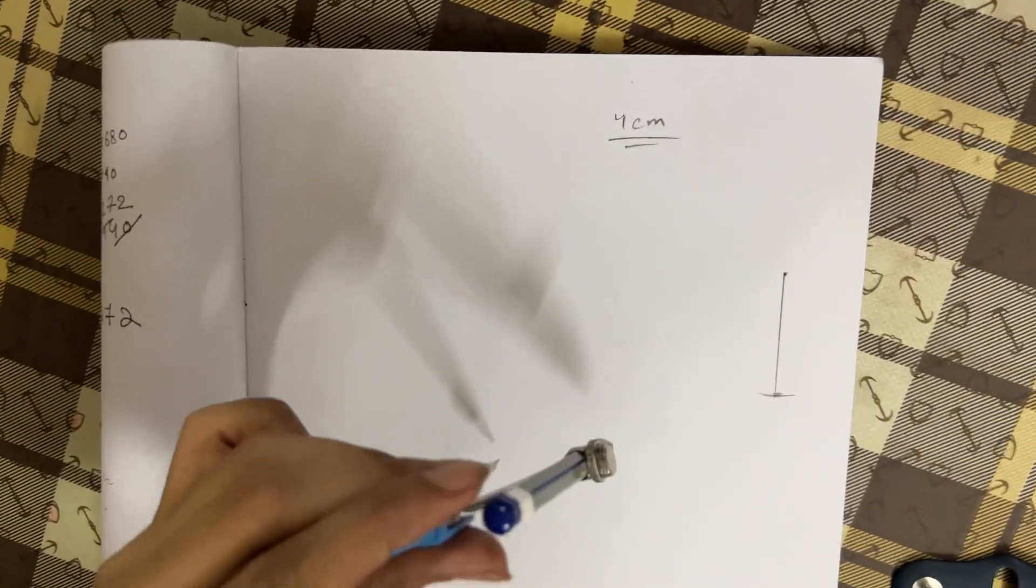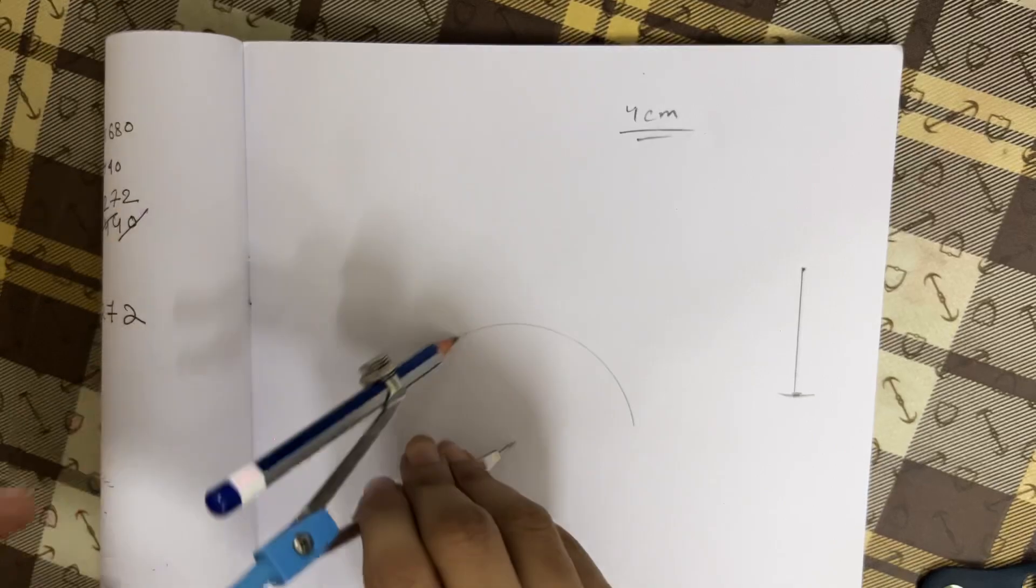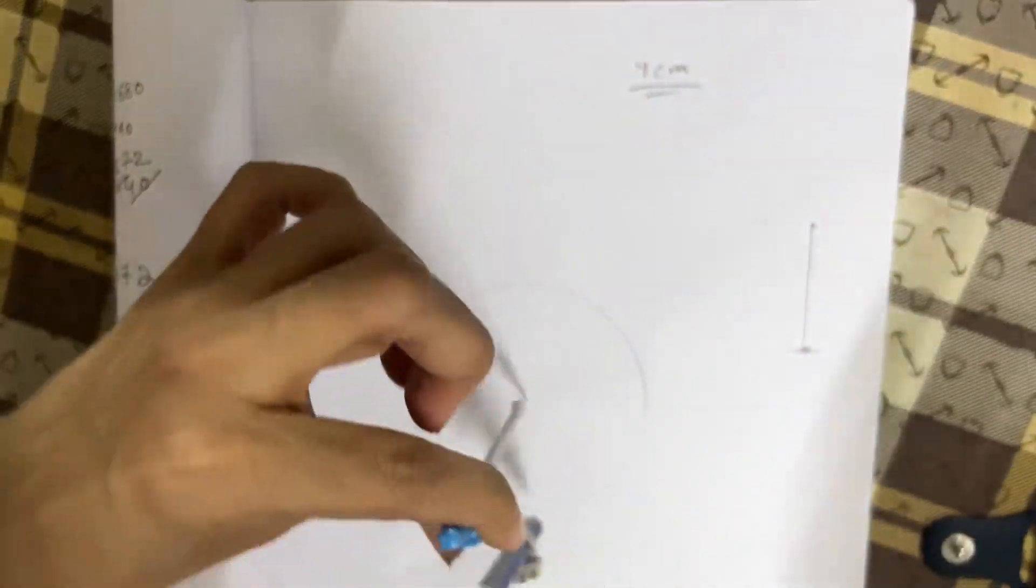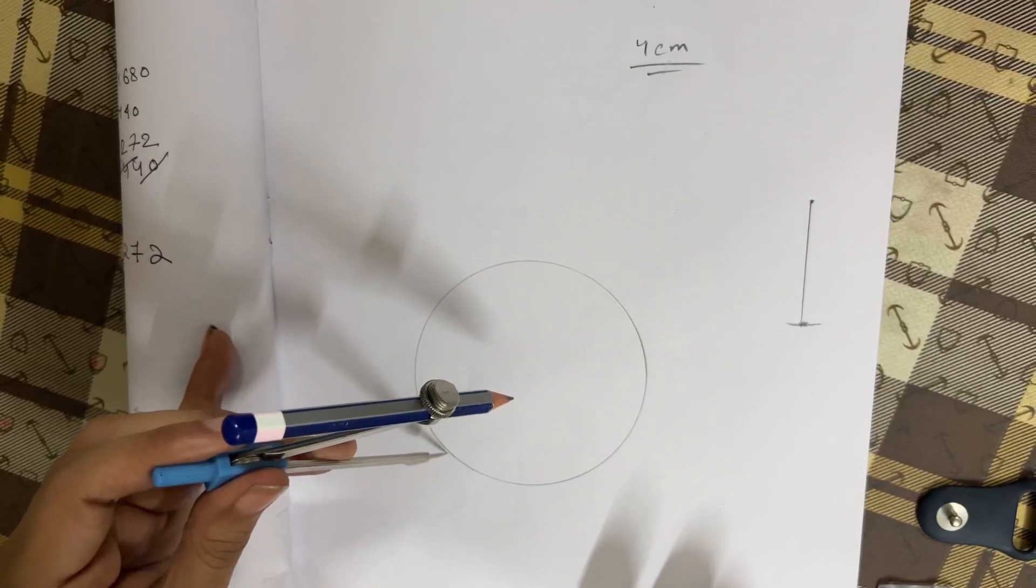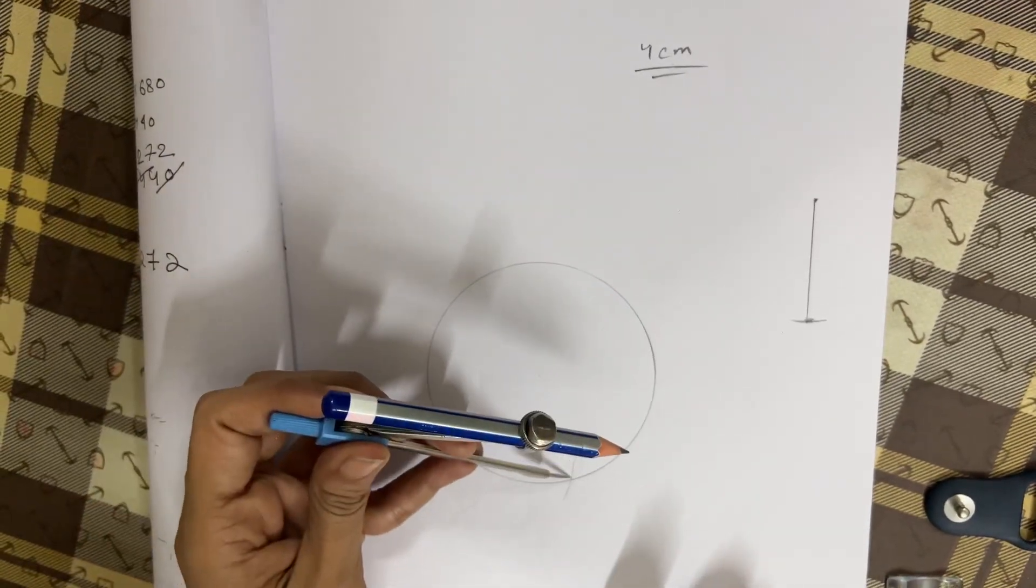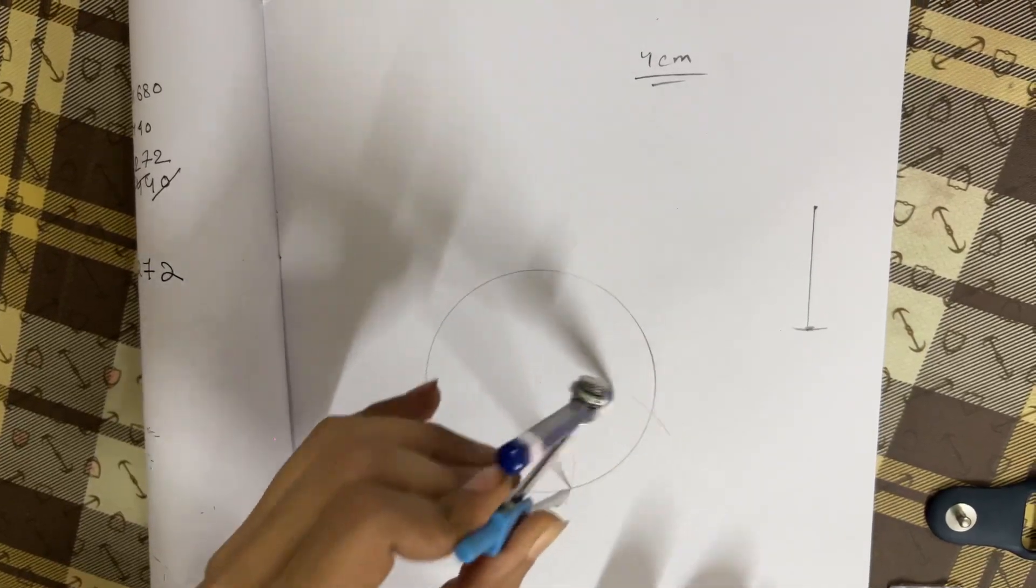So with four centimeter radius just draw the circle. Okay, this is the hack for the hexagon. Now from any point here, let's say if I start from here, I'll just keep on drawing arcs with the same arc without